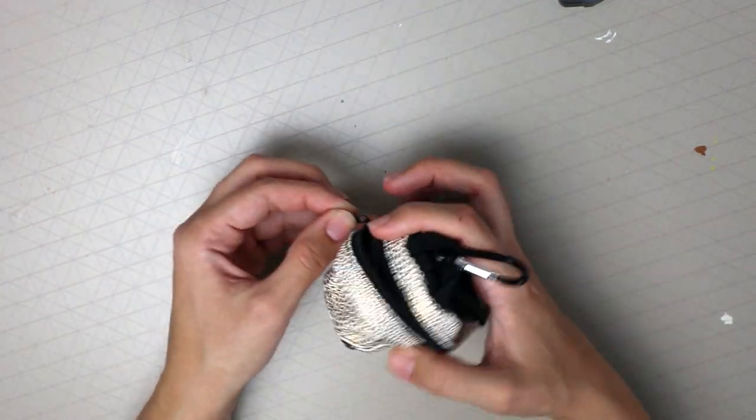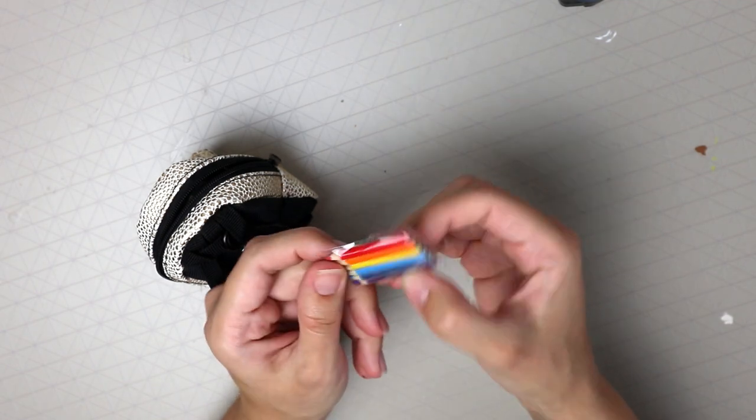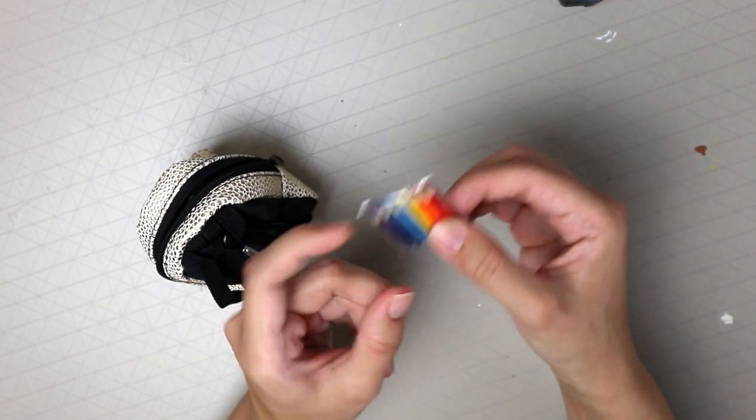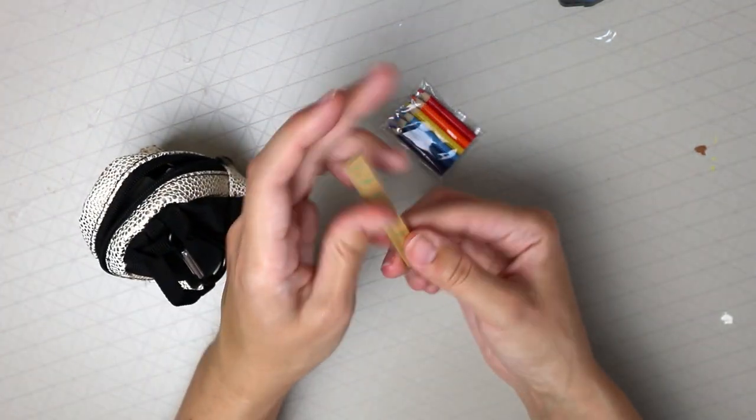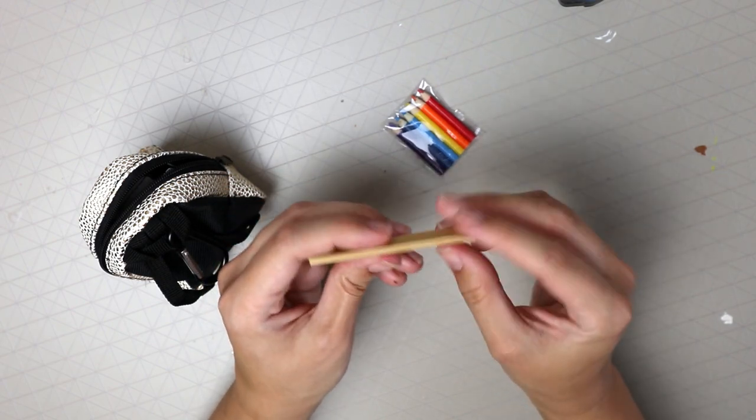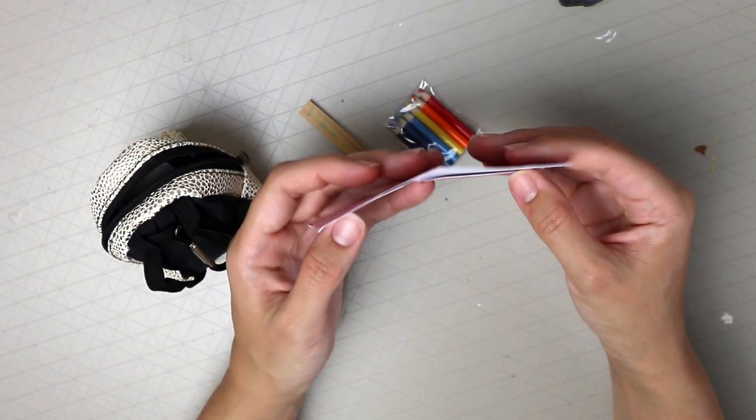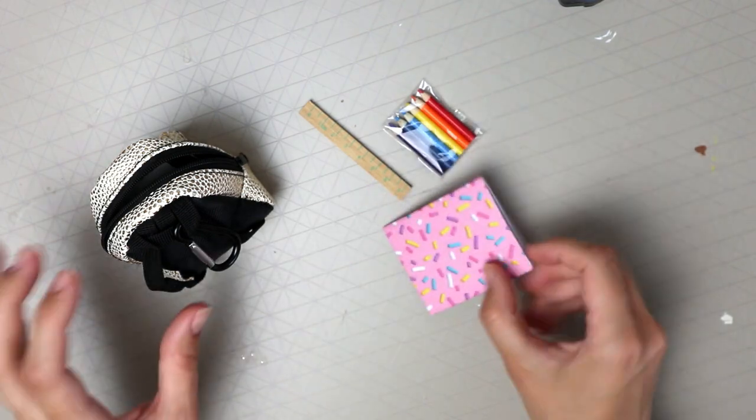So first of all I've got some mini pencils, these are so cute. I was considering making some so I'm glad I've got this. Oh look, a tiny ruler, how cute is that, seven centimeters. What's this? Oh, like a little folder for paper, looks like sprinkles you get on a cake or a doughnut.